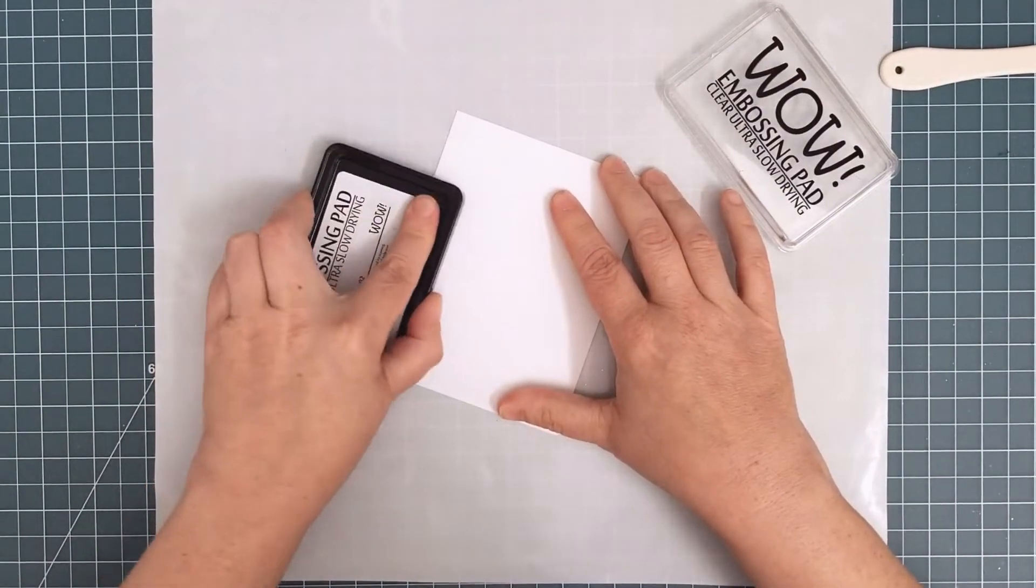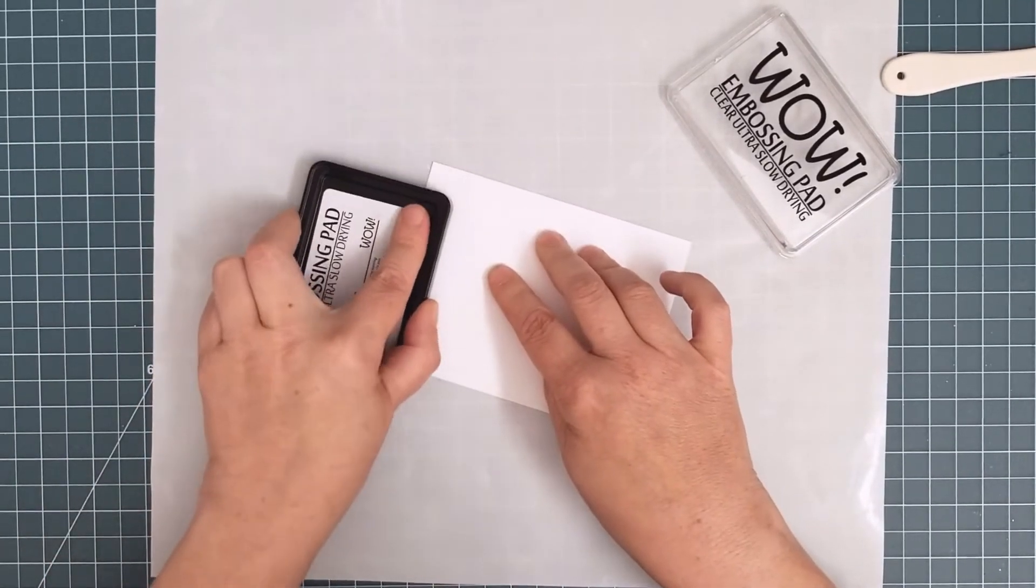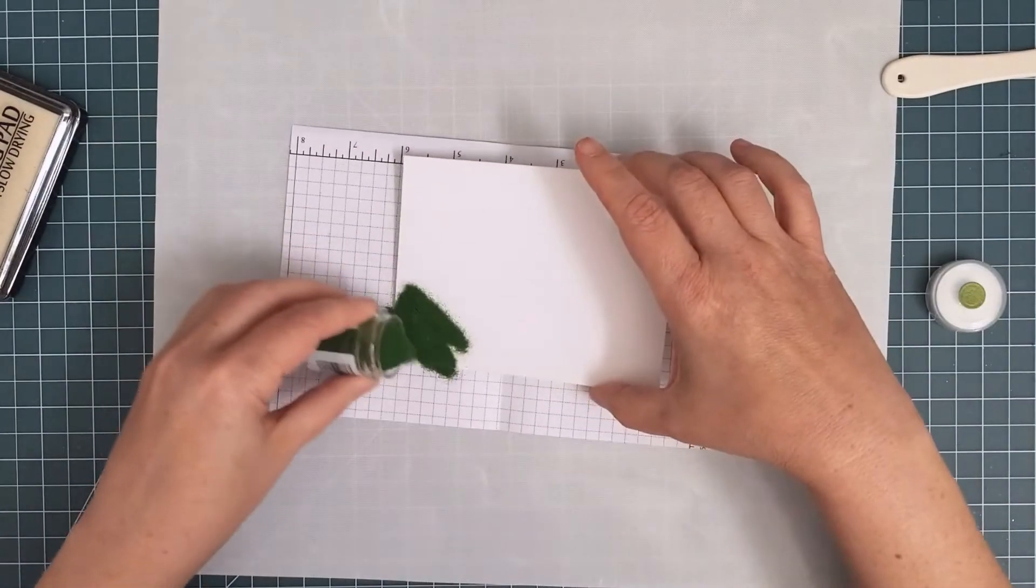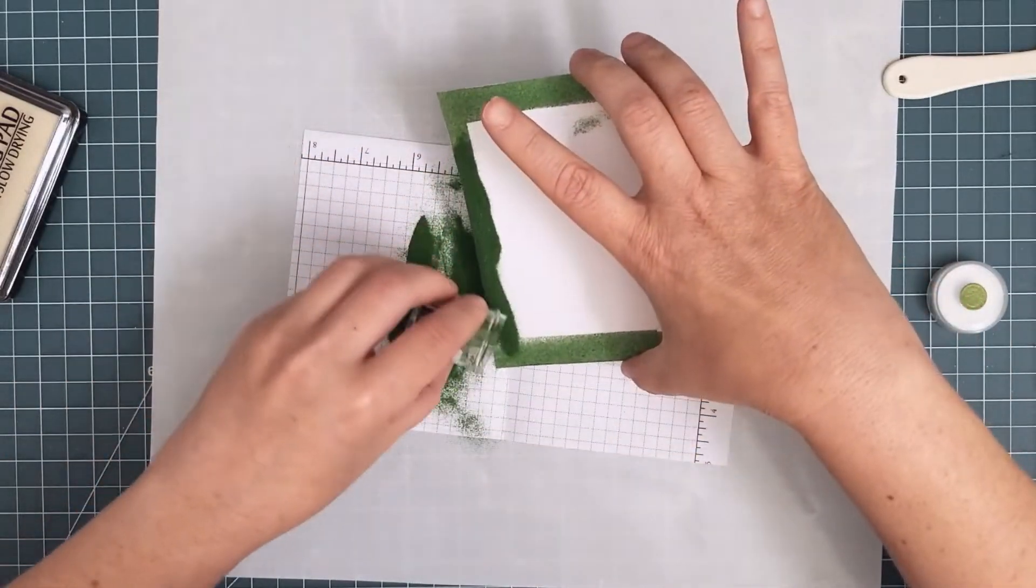To create a matching mat for my card I trimmed a panel to the correct size and then I put embossing ink around the edges just smooshing it down. No need to cover the whole panel or even worry about how neat the smooshing is since just the edges will be visible when the card is finished.